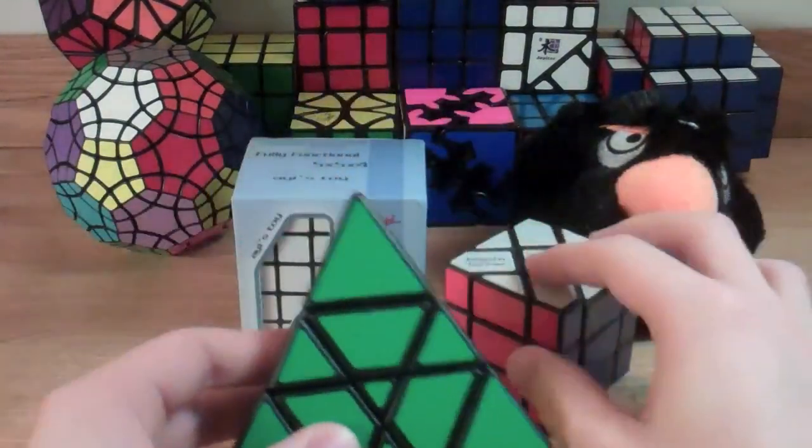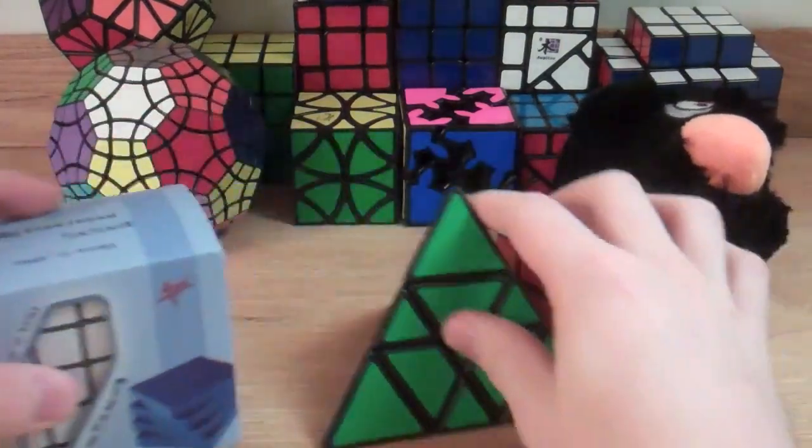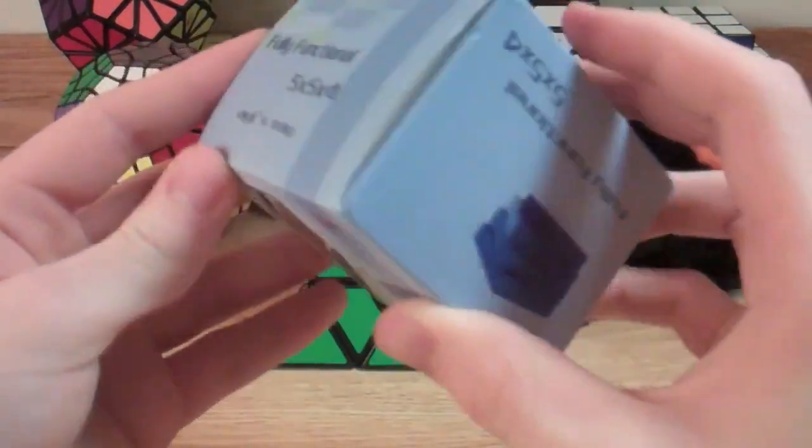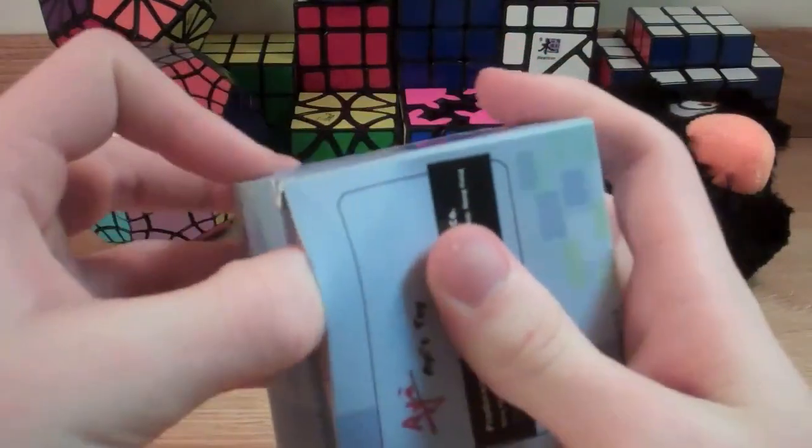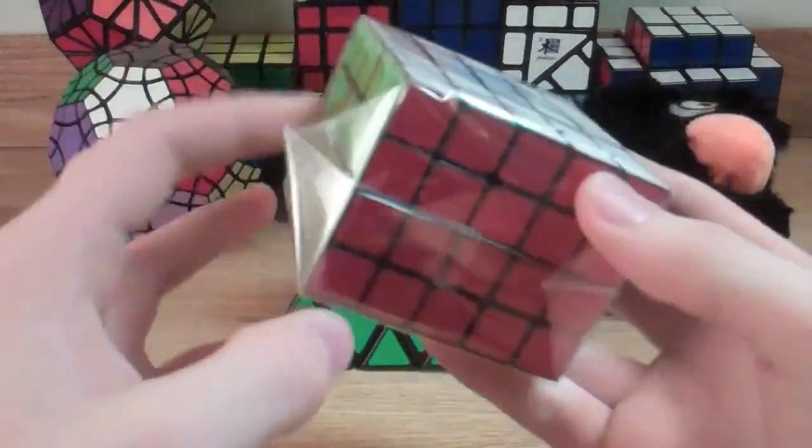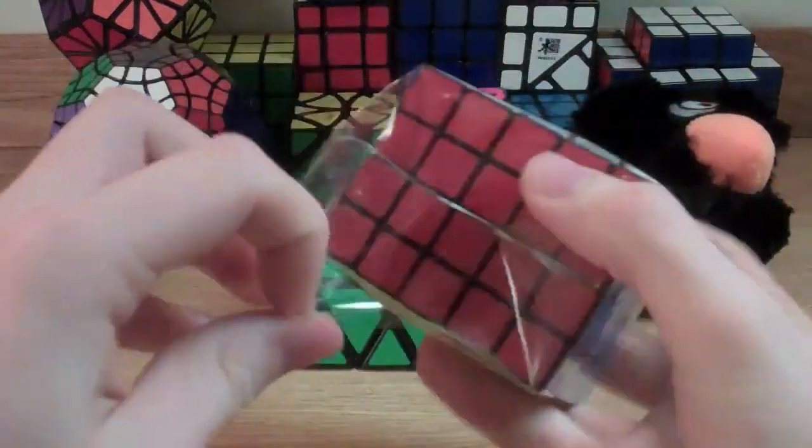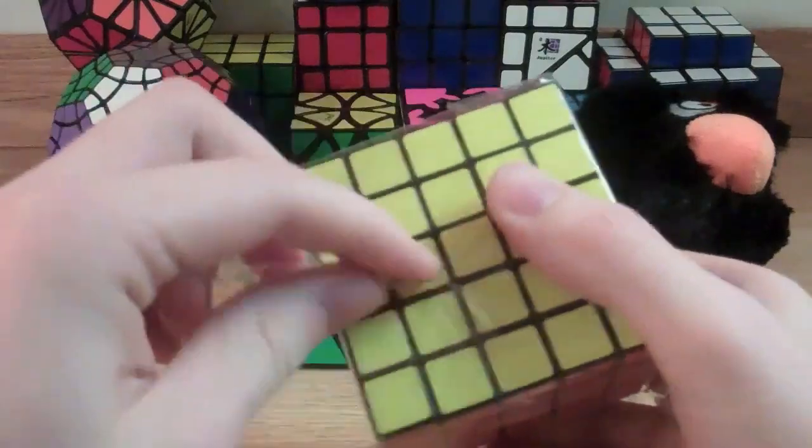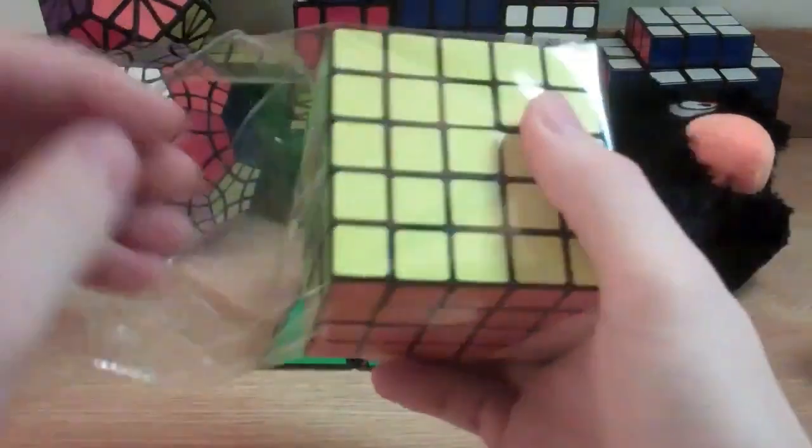And now the puzzle that I am most excited about. It's another Cuboid puzzle. It is the 5x5x4, and it just came out. It already has the stickers on it. When I got my 4x4x5, I had to sticker it myself, so I'm pretty happy that this has it on already.